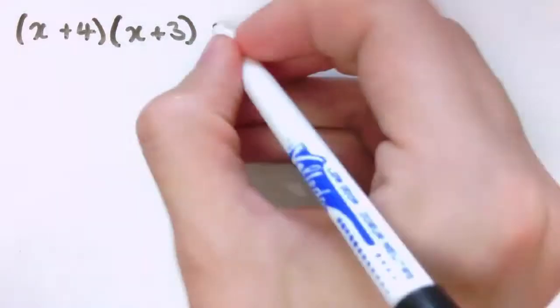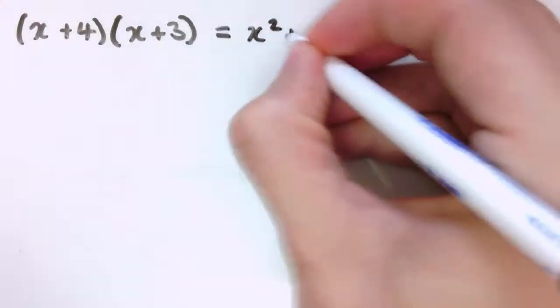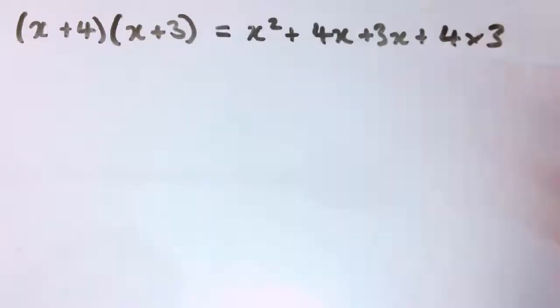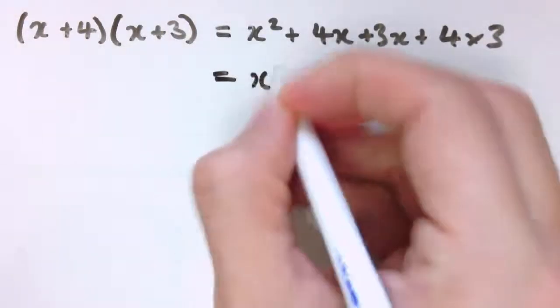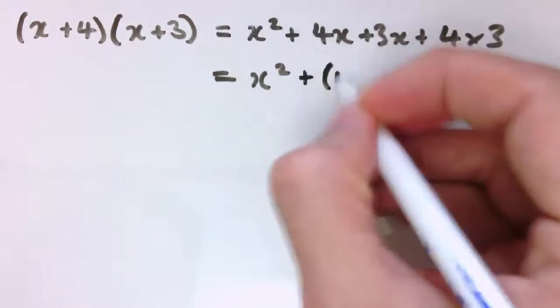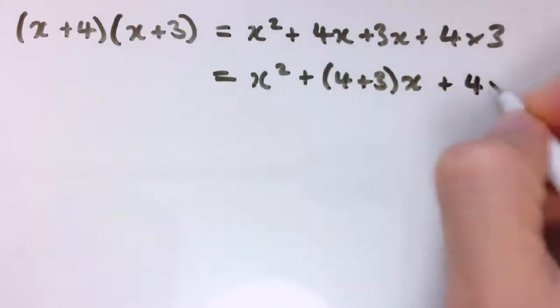So let's multiply out these brackets here, x plus 4 times x plus 3. I get x squared plus 4x plus 3x plus 4 times 3, which is 12. When I combine these together I get x squared plus 7x, and I'm just going to leave that for a second as 4 plus 3x, and this is still 4 times 3.